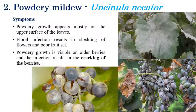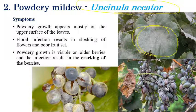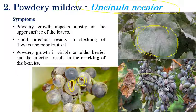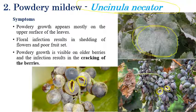The second disease is powdery mildew, caused by Uncinula necator. The name itself indicates white powdery growth on the upper surface of leaves, though it can sometimes be seen on both surfaces. The second important symptom is cracking of fruits. Fruits are cracked in powdery mildew, along with white powdery growth on infected fruits or berries. White powdery growth along with cracking of berries is the most important symptom of powdery mildew, caused by Uncinula necator or the new name Erysiphe necator.